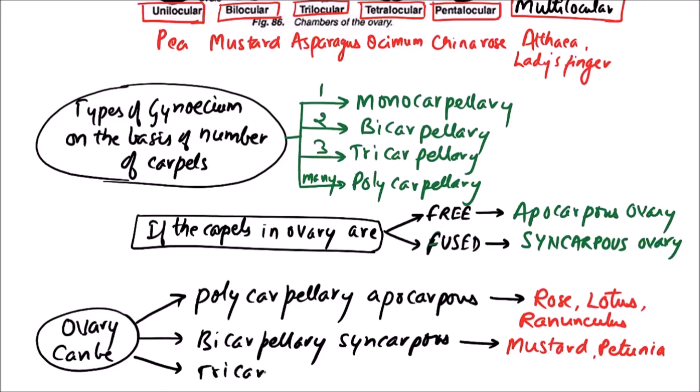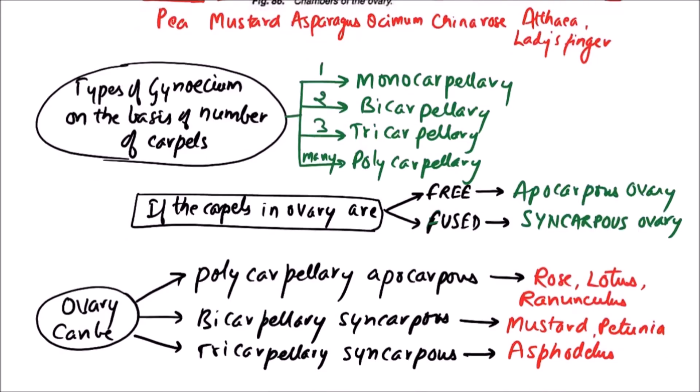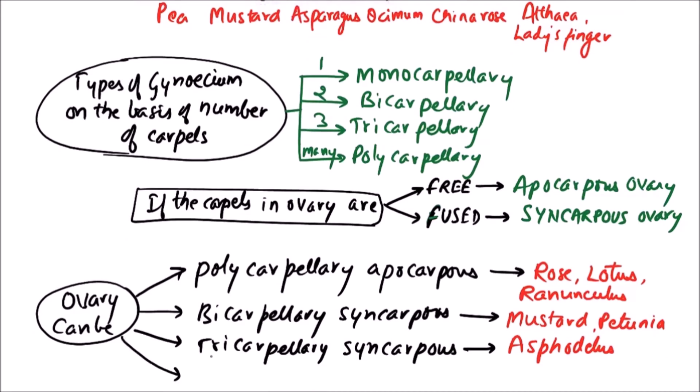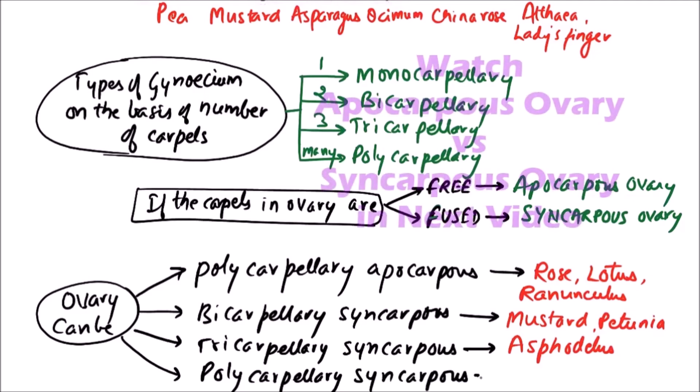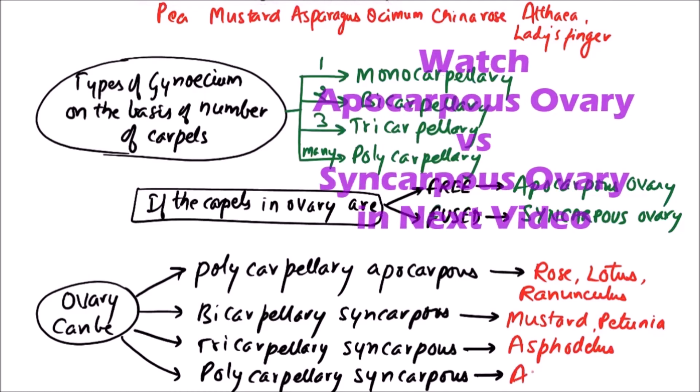The ovary can be tricarpillary syncarpous, this condition is observed in Asphodelus, and it may be polycarpillary syncarpous, this condition is observed in Althea.